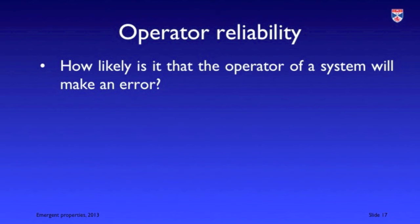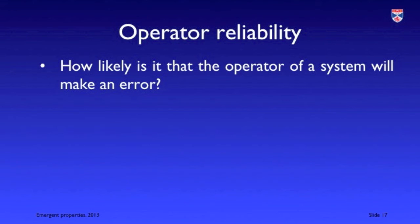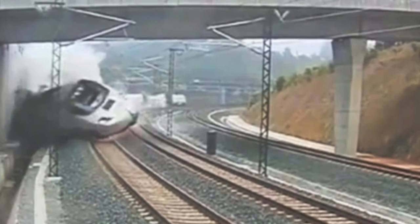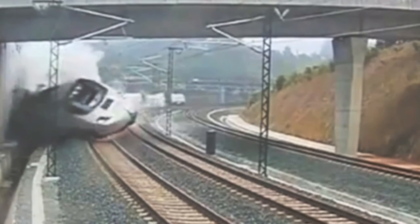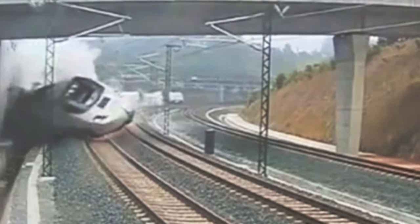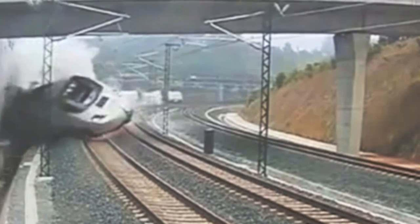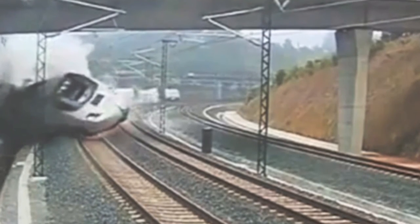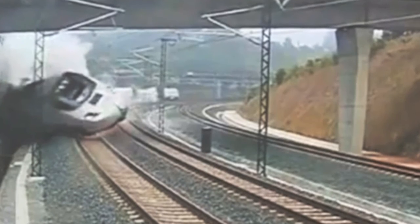Operator reliability concerns how likely it is that the operator of a system will make some kind of error, and how serious that error will be. As an example, a train driver in Spain took a curve at a much higher speed than he should have done, causing an extremely serious train crash.